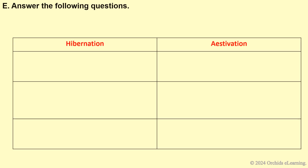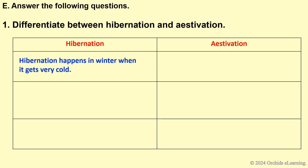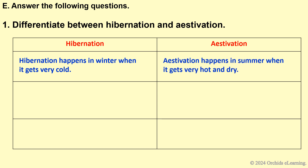Answer the following questions. Differentiate between hibernation and aestivation. Hibernation happens in winter when it gets very cold. Aestivation happens in summer when it gets very hot and dry.